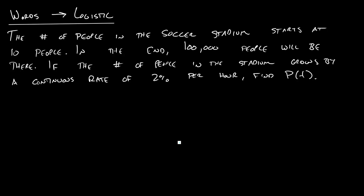So in this problem we have a soccer stadium and it starts with about 10 people and in the end there's 100,000 people. If at the beginning it's growing at a continuous rate of 2% per hour, find P of T.